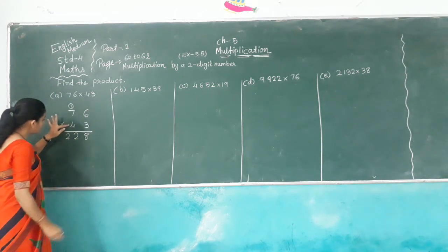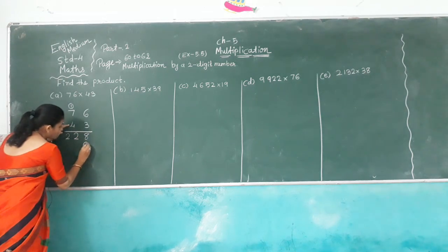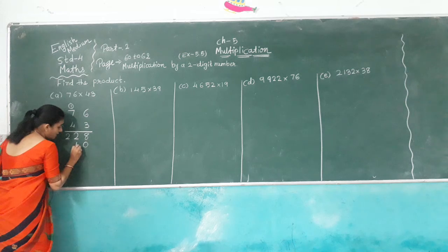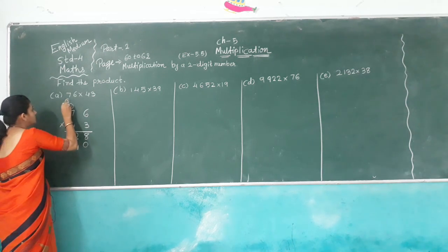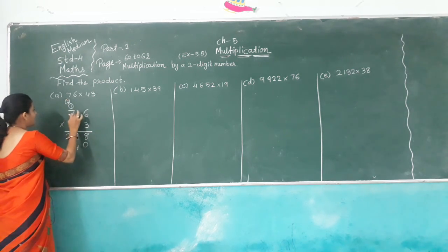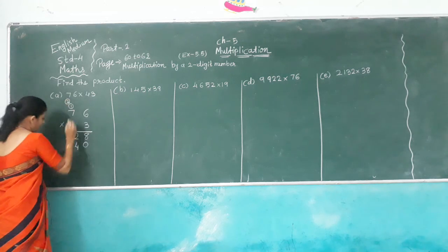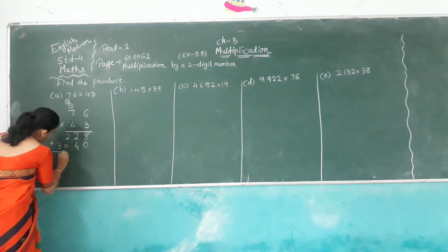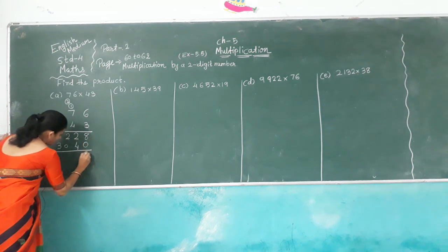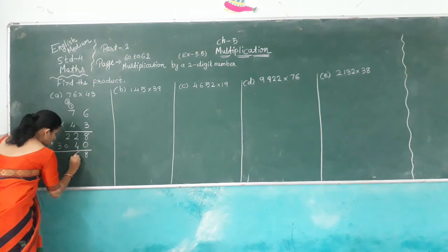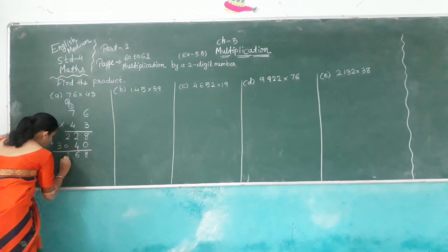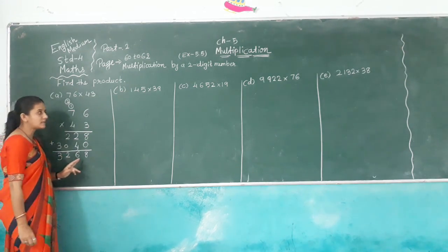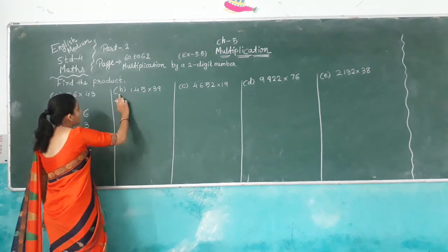Now we count the tens place. So keep here 1, 0 first. Then 4 times 6 is 24, carry over 2. 4 times 7 is 28, plus 2 is 30. Add both numbers: 8 plus 0 is 8, 4 plus 2 is 6, 2 plus 0 is 2, and 3. So we get answer 3,268.